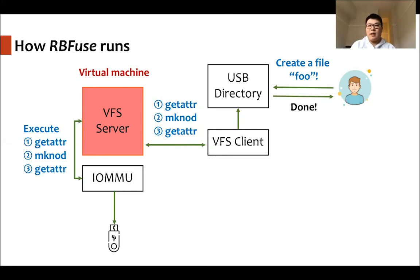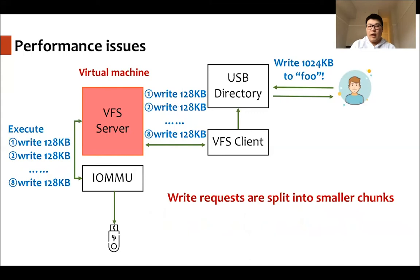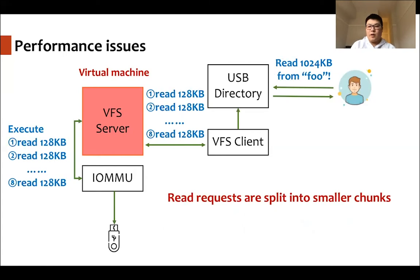However, this design has several issues. First, as we can see, there are too many requests for accessing metadata, such as getattr. For example, when you try to read 1,000 files, the VFS client will issue 3,000 different getattr requests to the server, which will definitely bring overhead to our system. And when you try to write content to a certain file, the VFS client splits it into smaller chunks. If you try to write one megabyte to a file, the VFS client will split it into eight different requests to the server. The same issue applies to read requests.